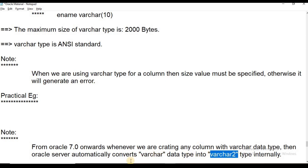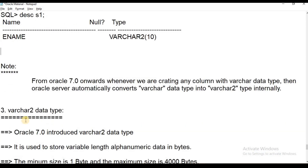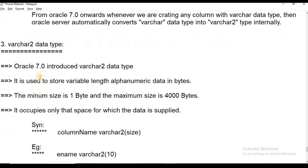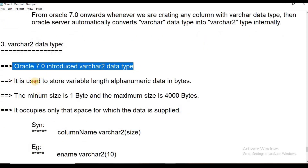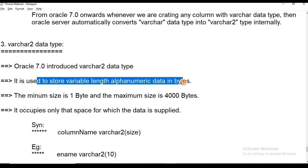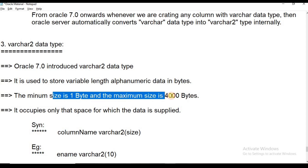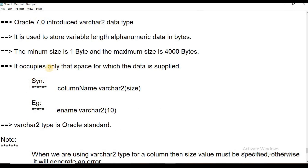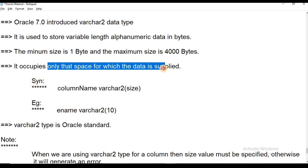VARCHAR2 is allocated up to 4000 bytes of memory. Now for VARCHAR2 data type: Oracle 7.0 introduced VARCHAR2. It is used to store variable-length alphanumeric data in bytes. The minimum size is 1 byte and the maximum size is 4000 bytes. It occupies only that space for which the data is supplied.